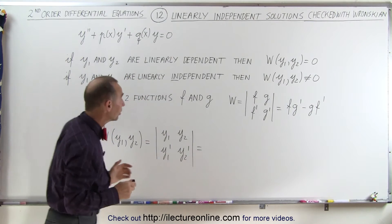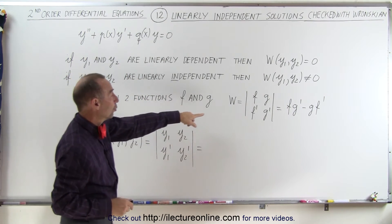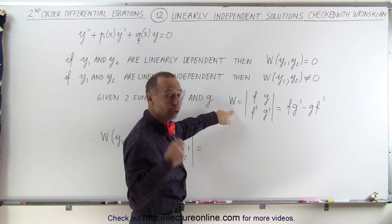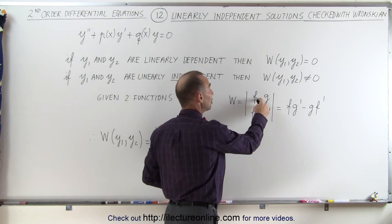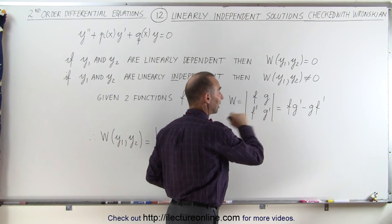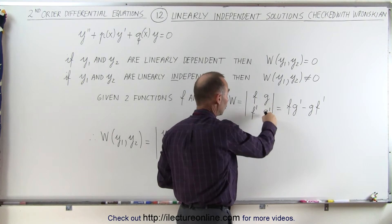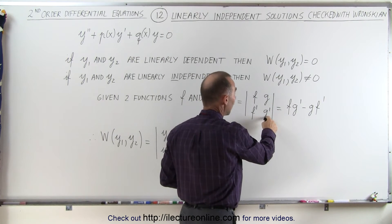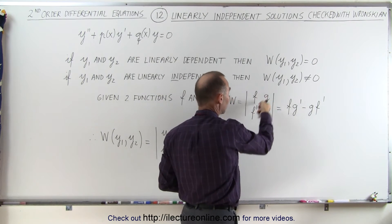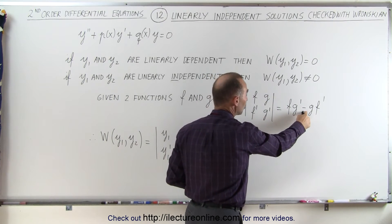What do we mean by the Wronskian? Given two functions, f and g, the Wronskian is equal to the determinant of f and g on the first row and f prime and g prime on the second row. To solve the determinant, you multiply the cross terms, so f times g prime minus the product of these, g times f prime, giving you fg prime minus gf prime.